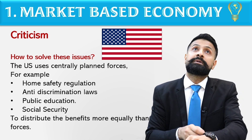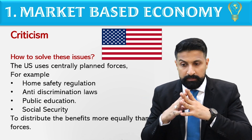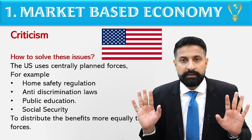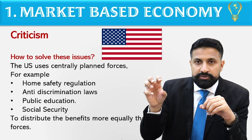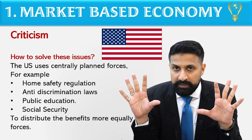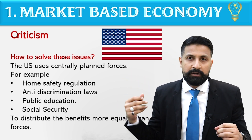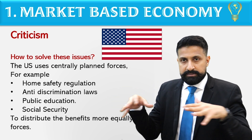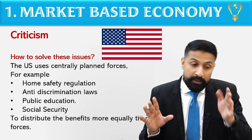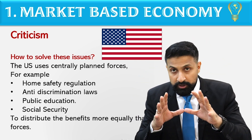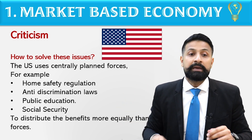Similarly in the USA, when COVID came, Donald Trump passed a law of approximately two trillion dollars — no one's salary should stop, money should keep flowing, everything should continue normally. Essentially, he did not allow the market to operate freely on its own. The government maintained control so that employers couldn't just fire people or cut salaries. Even though the GDP fell, the situation did not spiral out of control.